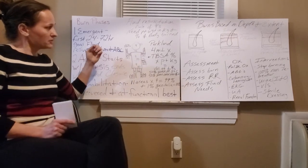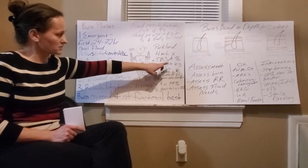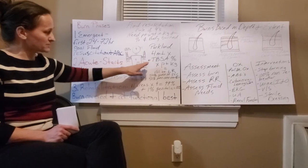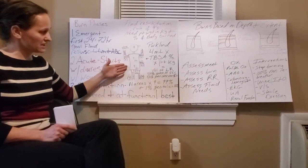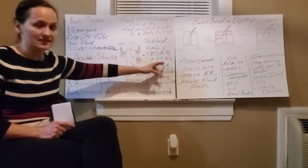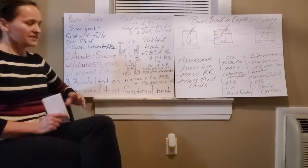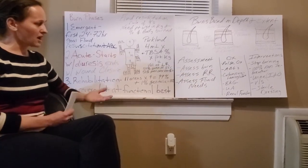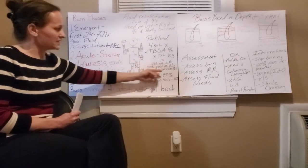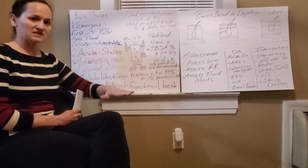Parkland, their model for fluid resuscitation is 4 mLs of lactated ringers times the body surface area that's been burnt, based on these percentages here, times the patient's kilograms, their weight in kilograms. And that gives you the volume of lactated ringers. Now, this patient, once you find out what their volume is, in the first eight hours, they'll get 50%. And over the next 16 hours, they'll get the other 50% of that fluid for resuscitation.